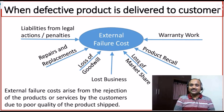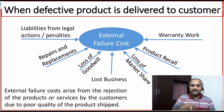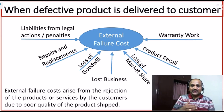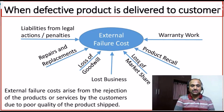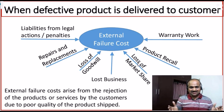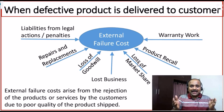There are scenarios where organizations like Toyota and BMW recall their products because they observed some product problems after they got shipped to the end customer. Also, we will be offering a warranty period. During the warranty period, if defects are shipped to the end customer, we have to service those requirements for free, and it costs the organization that produced the product. External failure costs arise from the rejection of products or services by customers due to poor quality of the product shipped.